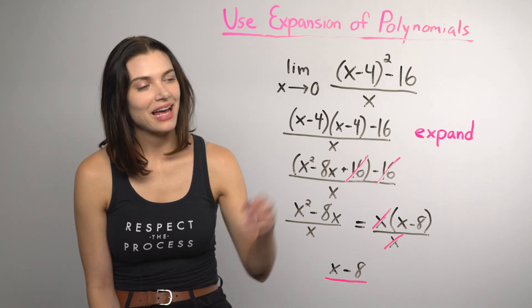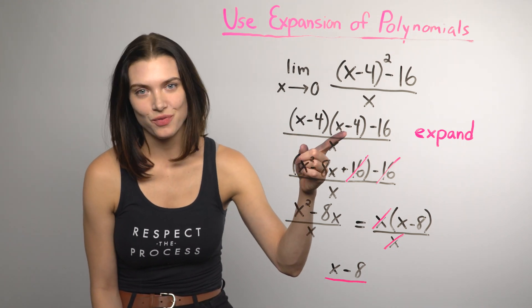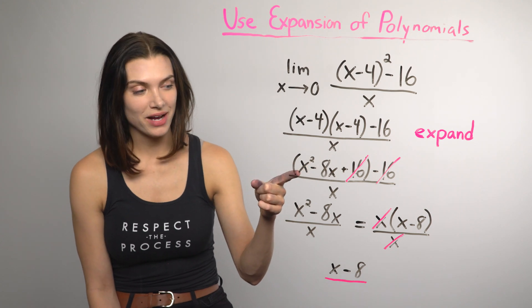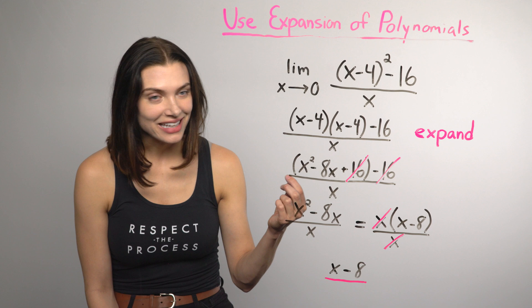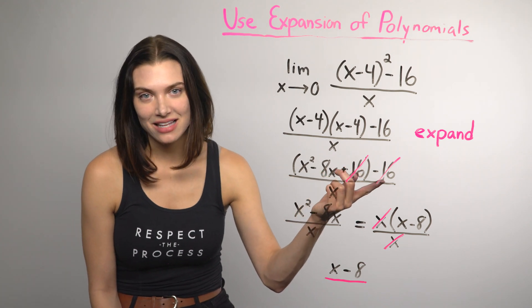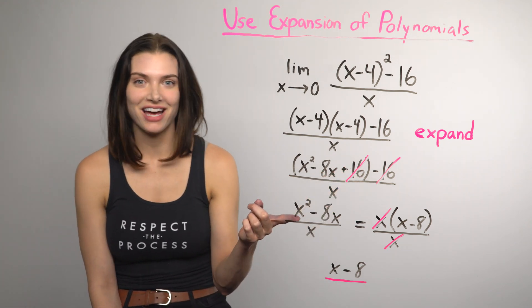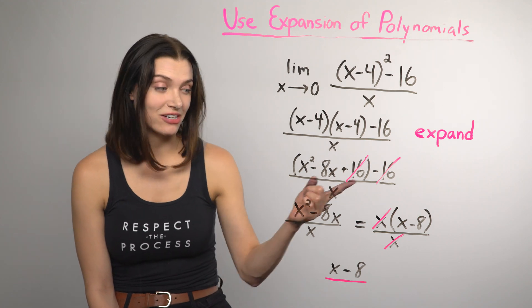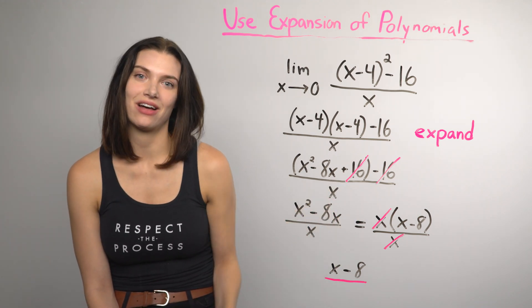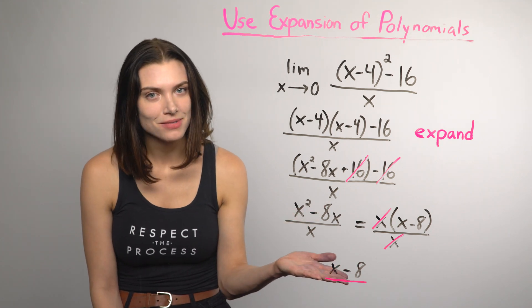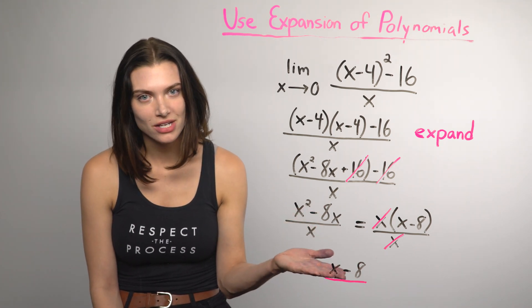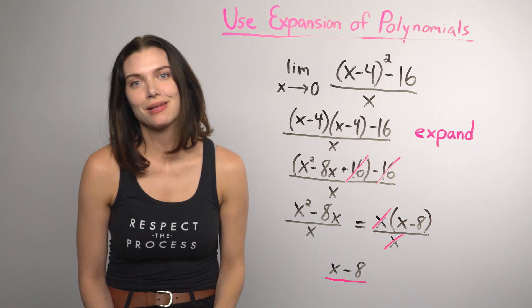When I multiplied x minus 4 times x minus 4, that ended up as x squared minus 8x plus 16. And luckily, the 16 and minus 16 canceled, which left three terms that all had x's in them. So I factored out the x on top and canceled it out. That just leaves x minus 8. x minus 8 can't end up 0 over 0 with direct substitution. So it's the perfect time to do direct substitution again.